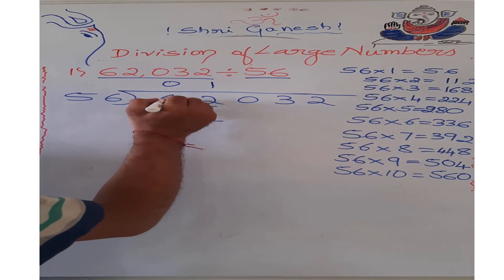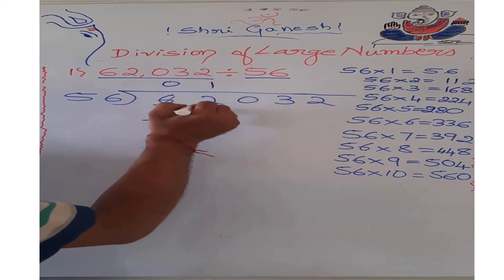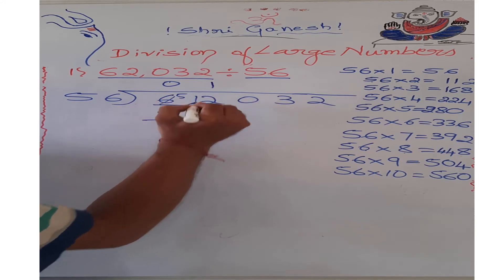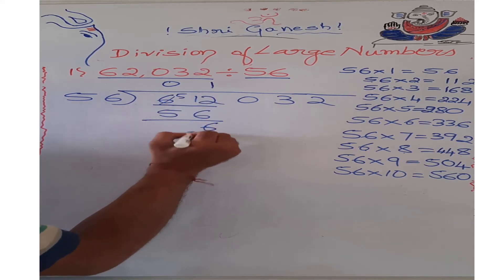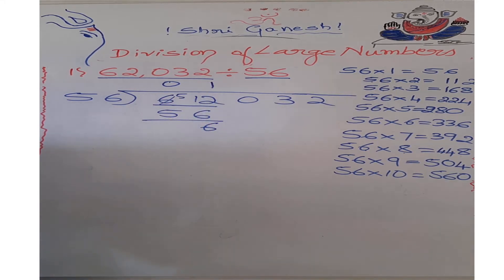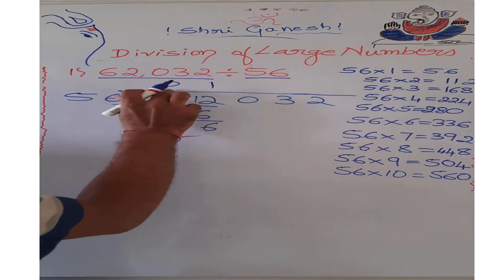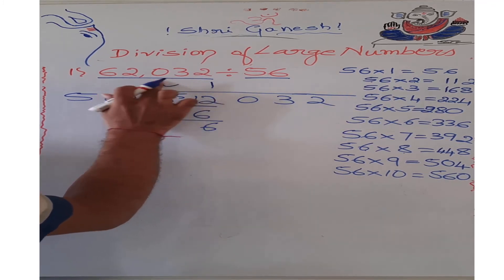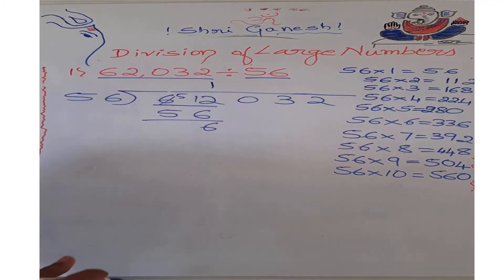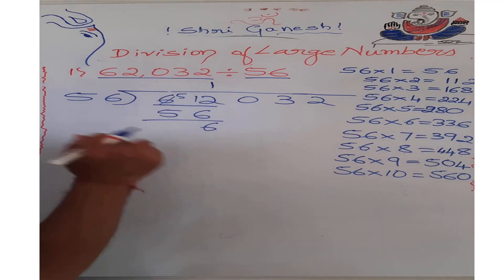I borrow from this 6, 6 became 5. This became 12 minus 6 equals 6. 5 minus 5 equals 0. So 0 doesn't have value, so I will remove this 0 also. Now we finish this division with 2.